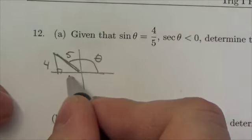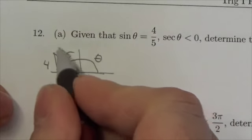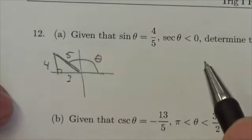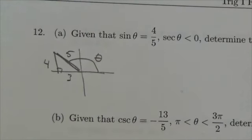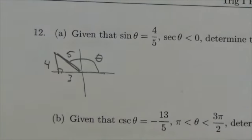Now, it shouldn't take you much to realize that with a triangle like this, with a hypotenuse of five and one leg is four, this leg here is three. If you have to use the Pythagorean theorem to get it, that's fine. But it's a triplet, a Pythagorean triplet.